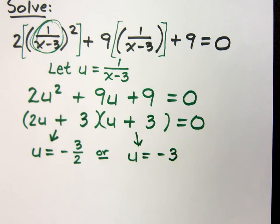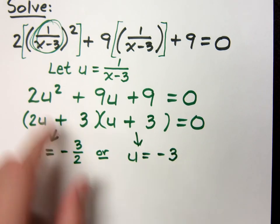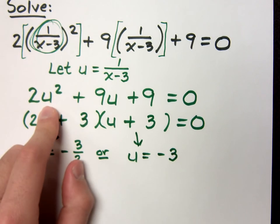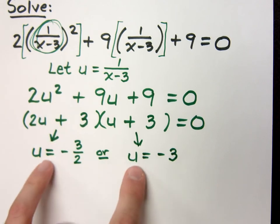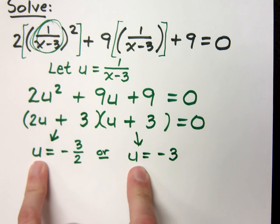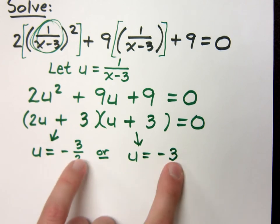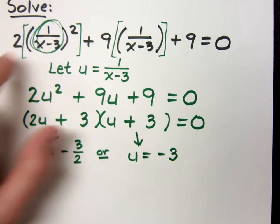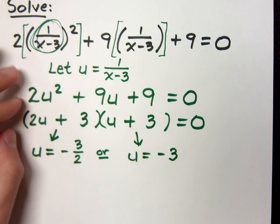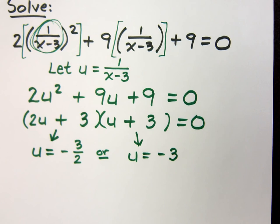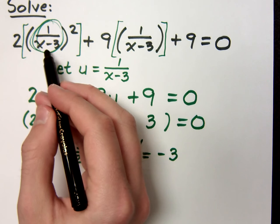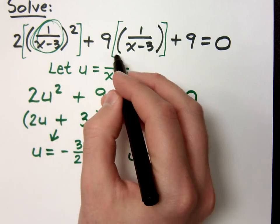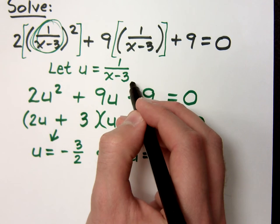Now, it's very important to notice what's going on here. I changed from x's into u's because it was easier to see and easier to work with. And I get my answers right here. But understand, this is in terms of u, not x. You do not plug these numbers into anything. Instead, you leave this world right here. We're going to leave this universe, so to speak, and we're going to go to a place where we were supposed to be, which is with 1 over x minus 3. So I make the substitution going back. u equals 1 over x minus 3.